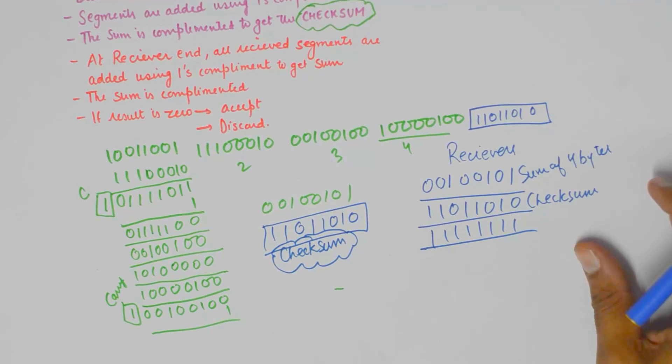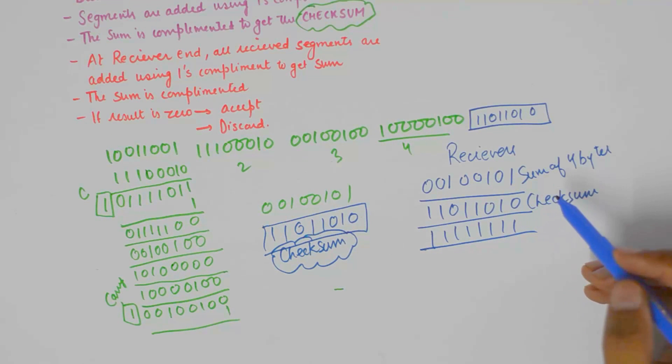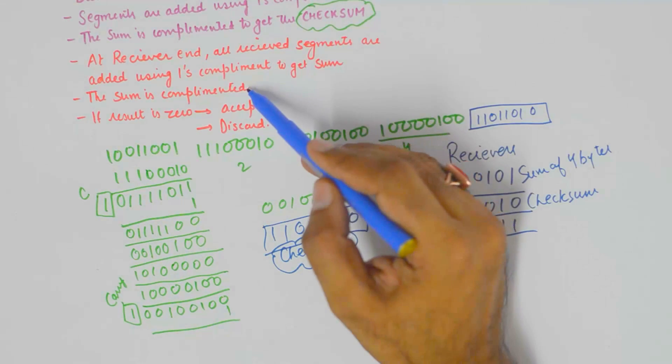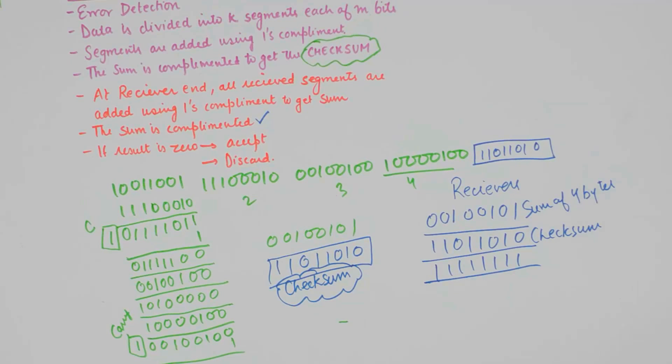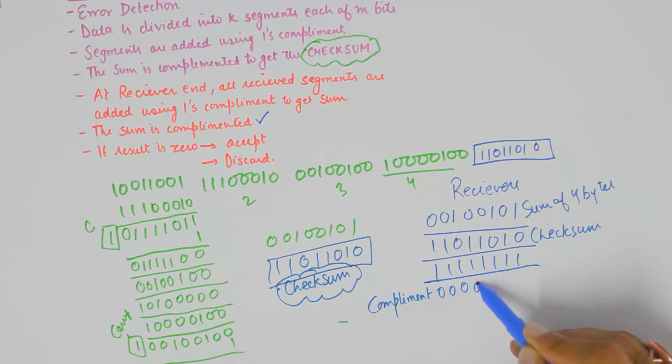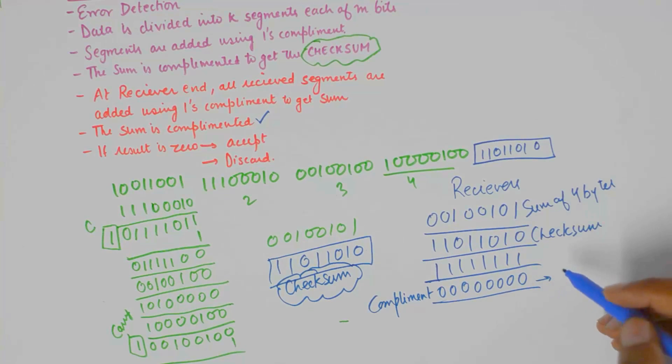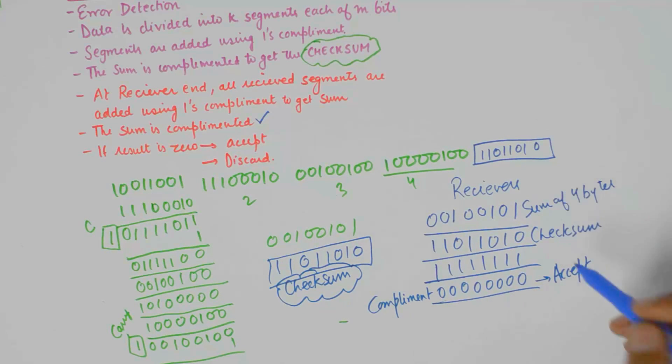Well, I hope this makes sense now. And once we complement the sum, which is the last step of the checksum algorithm as you can see it from here. Once we complement it, we get an all zero thing here. And if it is an all zero thing that we get at the end, then we accept the whole string of data. Then we accept everything which was received as an error-free transmission.